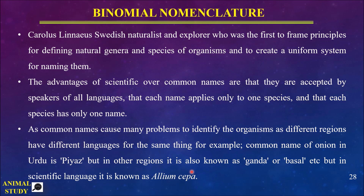This is what binomial nomenclature is — giving one specific name to an organism or species that is based on two terms, so that this organism can be easily identified. For example, if someone in Pakistan says 'Allium cepa has these characteristics', a person from another country speaking a different language will have no difficulty understanding what is being referred to. If someone from here went abroad and talked about 'pyaaz', the other person would not know what it is. That is why scientific names are given, so that any organism — whether plant, animal, or any other — can be easily identified.